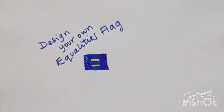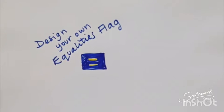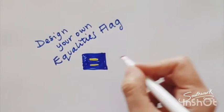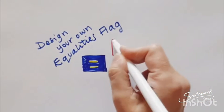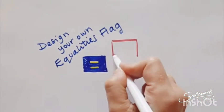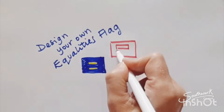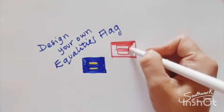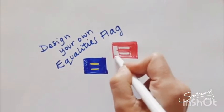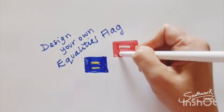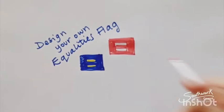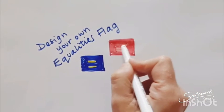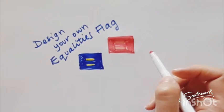Now, there's another Equalities Flag that's all about marriage equality. And that one looks like this. It's very similar — a red flag. The equal sign is in the middle again. Just a different colour scheme, red and pink. That's about marriage equality — equality for you, whoever you love.